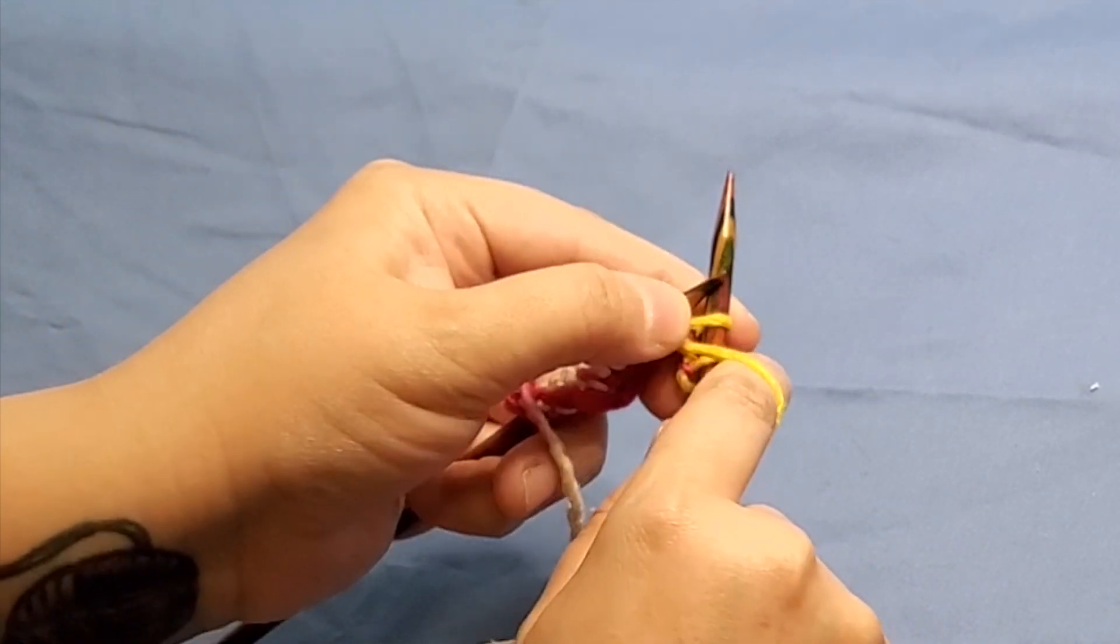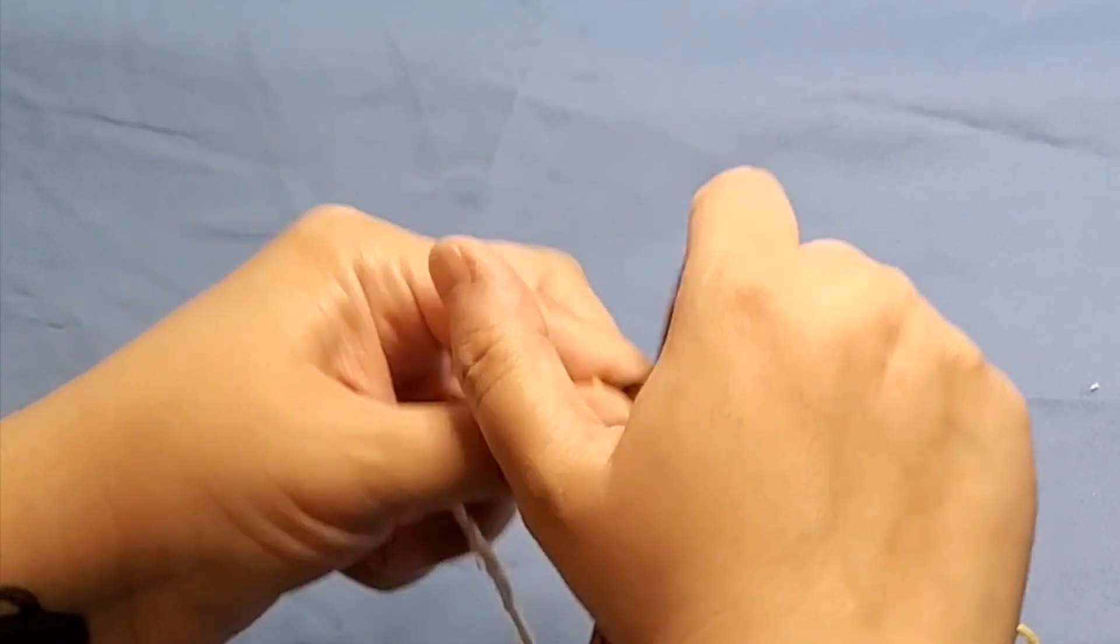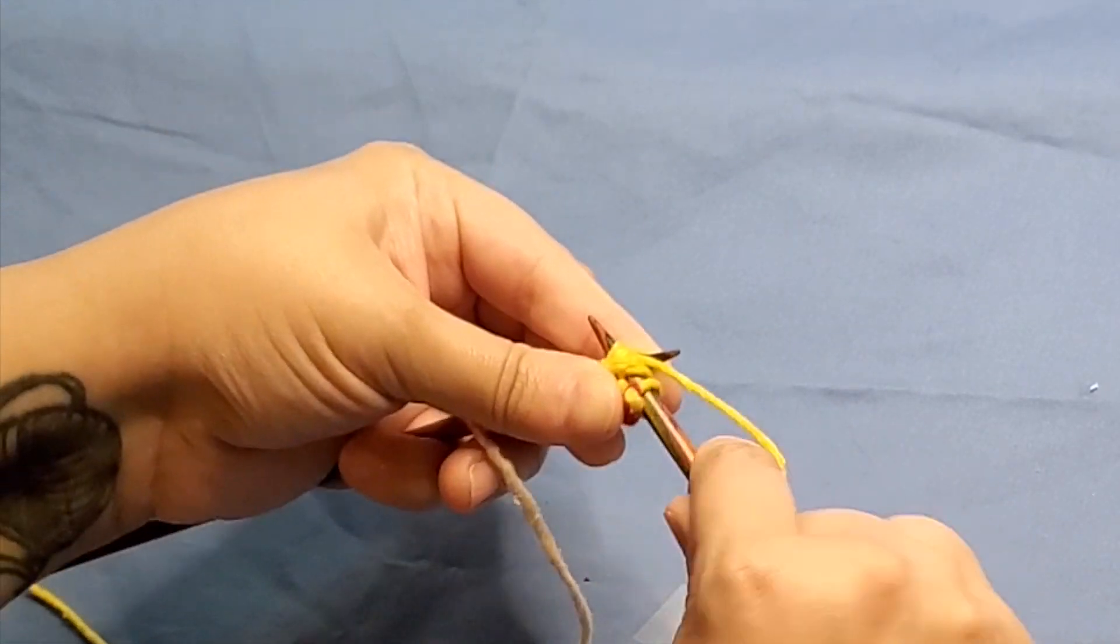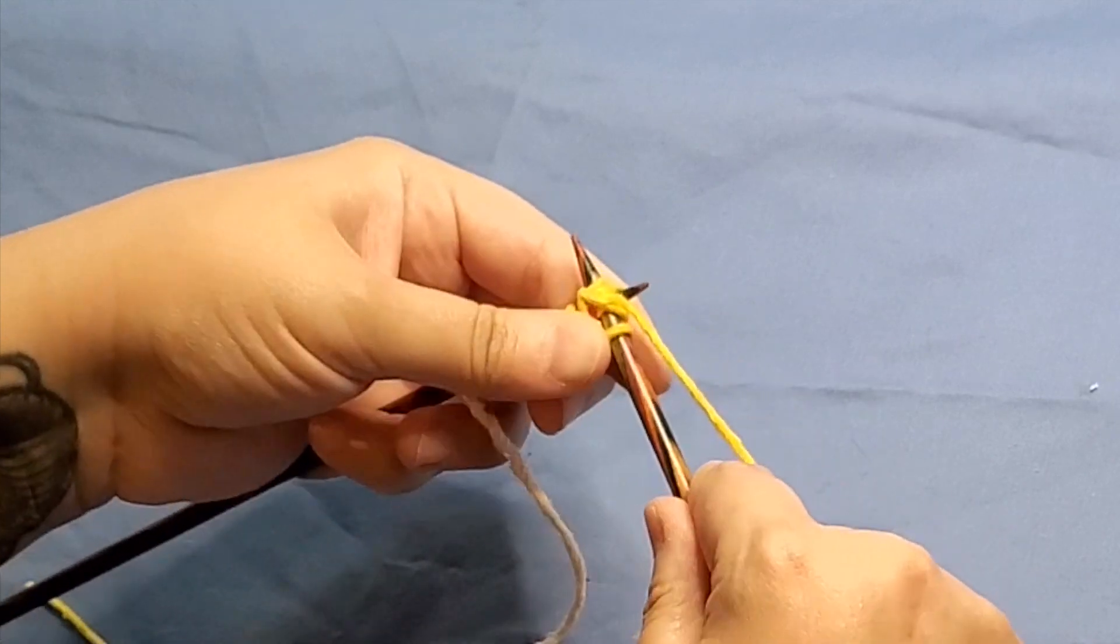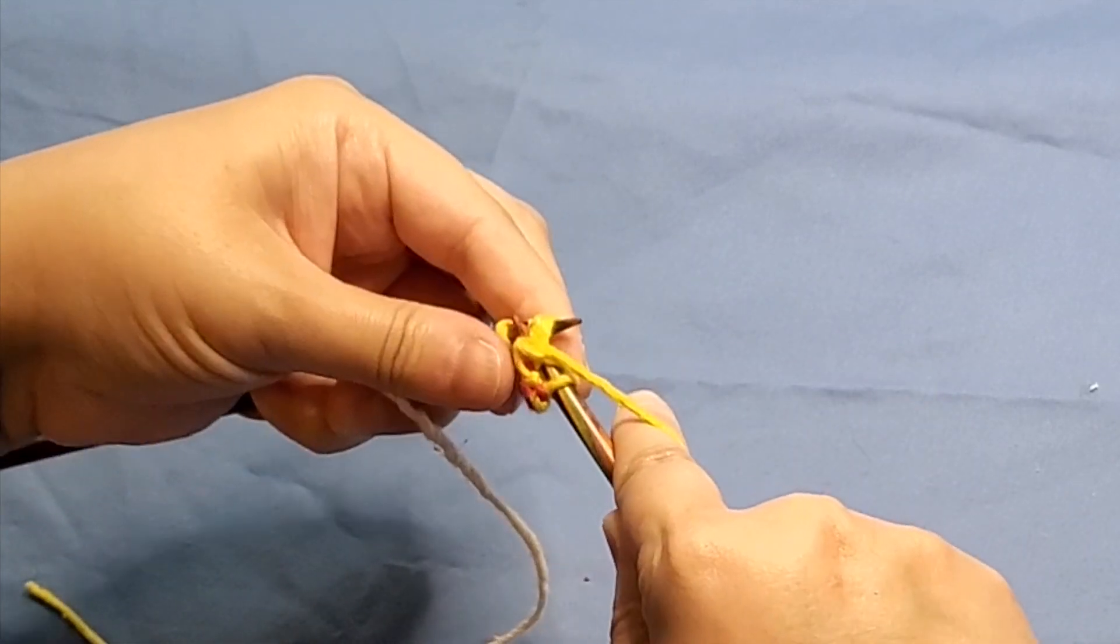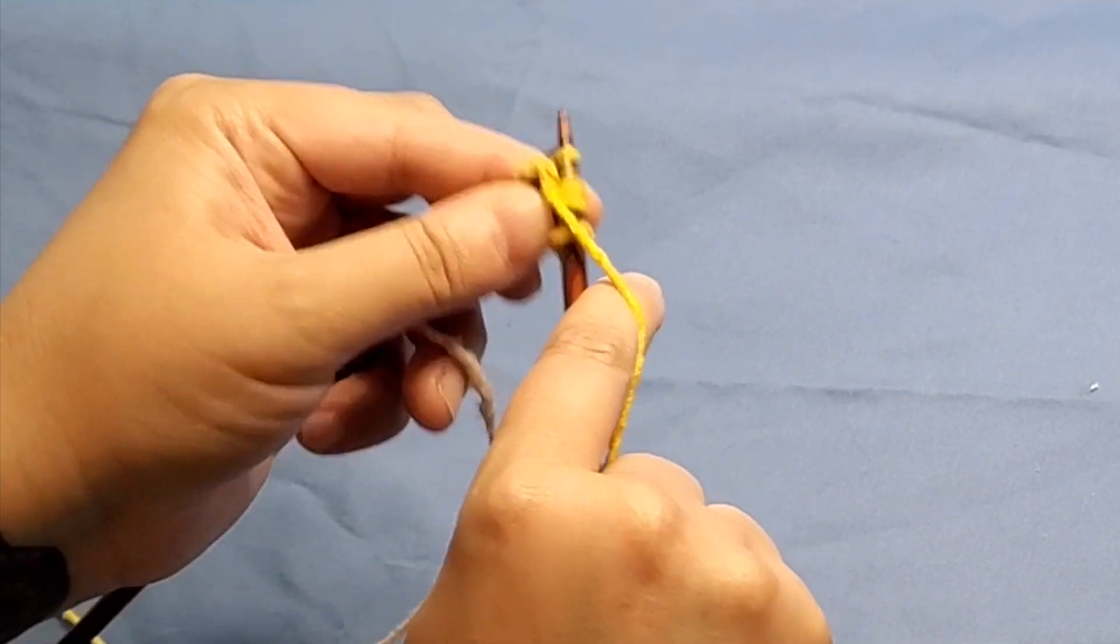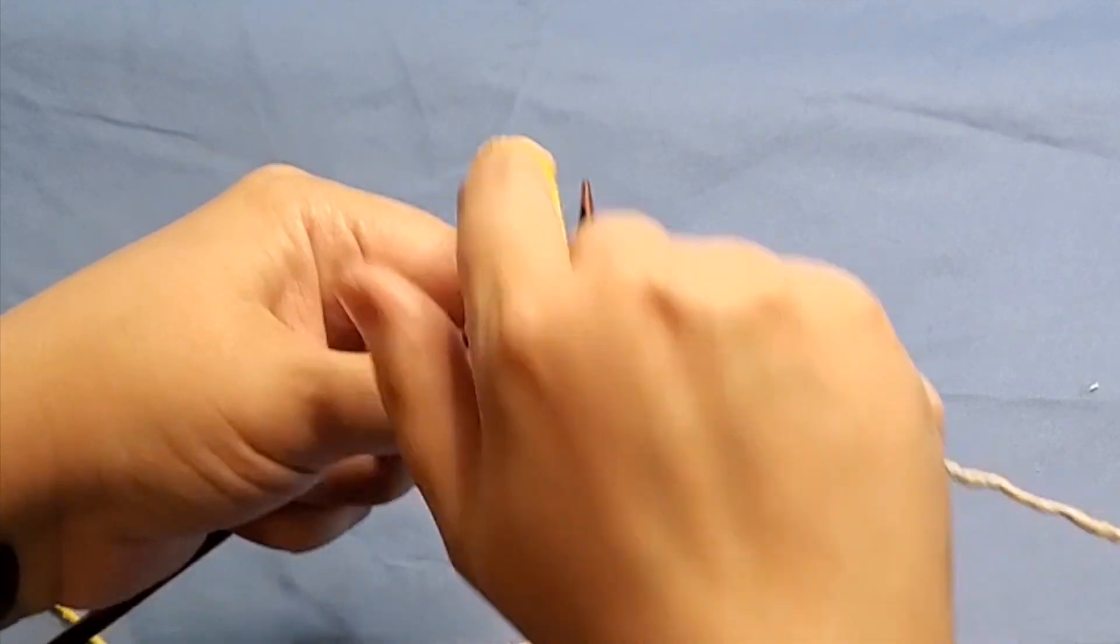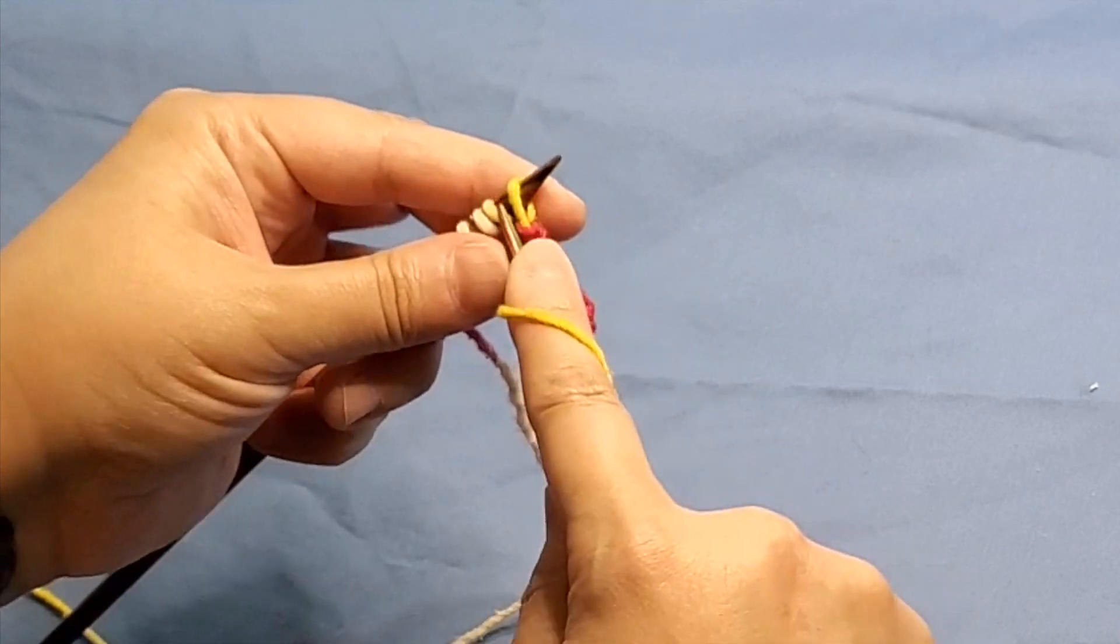Because you're going to do a yarn over and they're going to knit those three stitches again. And this is why you're supposed to do daisy stitch very loosely just because it's a little bit fiddly to do it. And then you're going to knit the next stitch.